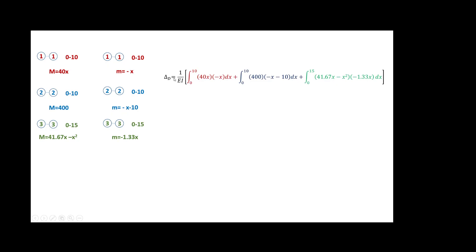Now these are the sections we found with the moments in every single section. To calculate the horizontal displacement at that point, you apply the virtual work equation: one divided by EI — EI is constant in this case — integrated from 0 to 10, 0 to 10, and 0 to 15, multiplying the real moment function by the virtual moment function in each section. When you solve for that, you get the horizontal displacement at point B, which comes out negative. You may get slightly different numbers due to the approximation of 41.666 vs. 41.67.